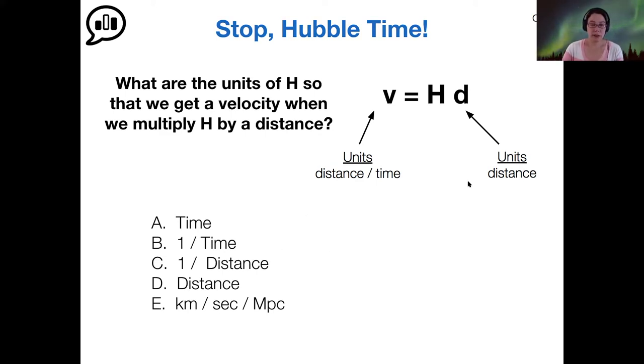Okay. Yes. In the units that we usually use, E would be correct. But if we're just thinking about what kinds of units and not the specific unit, then we are looking at B, that the Hubble constant has to have units of one over time in order to make this relationship work out.